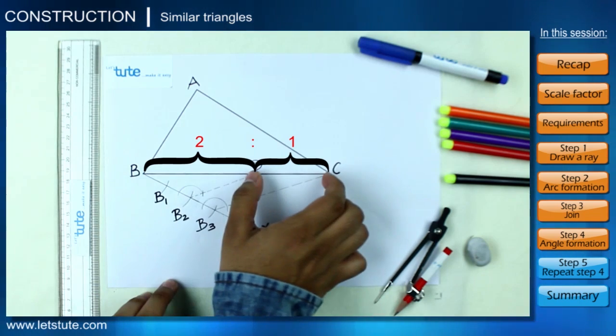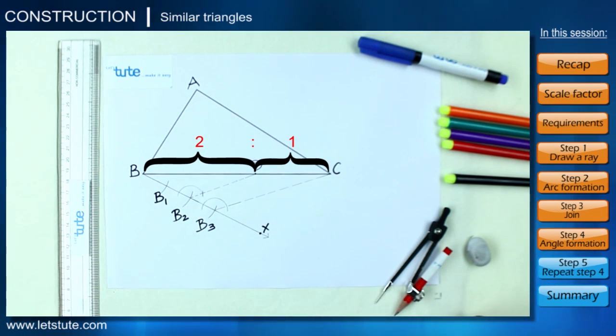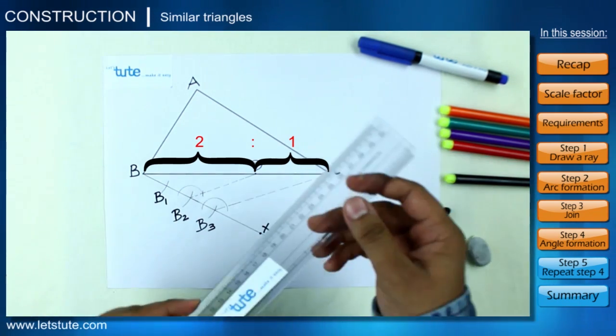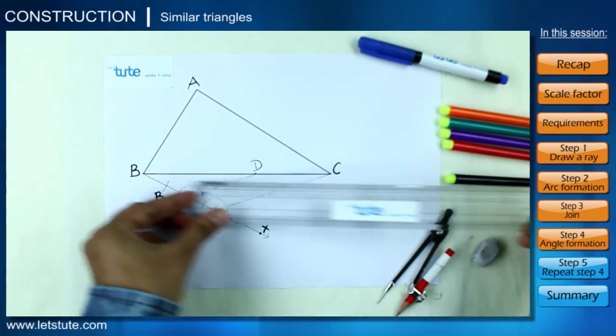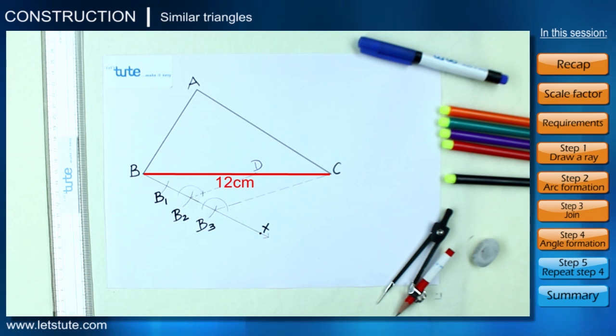Now we can check this by conventional way of taking a scale with standard markings and measuring the lengths. If let's say BC was 12 centimeters, we must get BD as 8 centimeters and DC as 4 centimeters, because that is the 2 is to 1 ratio.